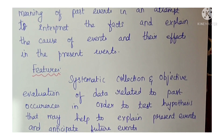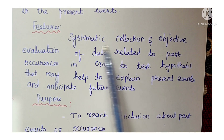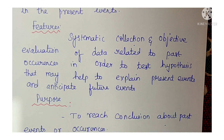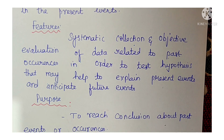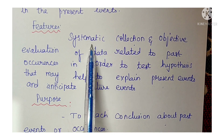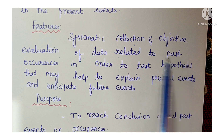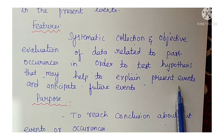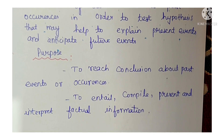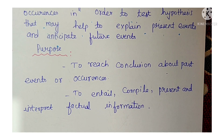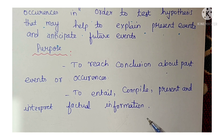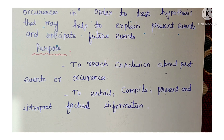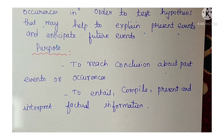The features of historical research: it involves systematic collection and objective evaluation of data related to past occurrences, in order to test hypotheses that may help explain present events and anticipate future events. The purpose is to reach conclusions about past events and to compile, present, and interpret factual information about those past events.